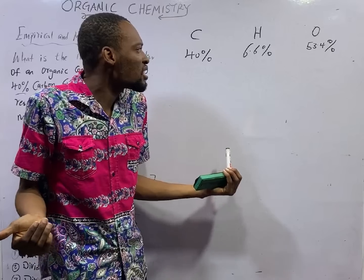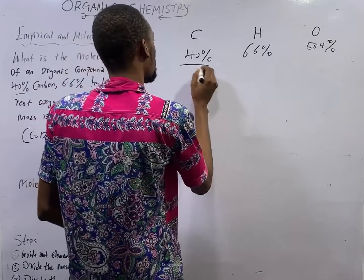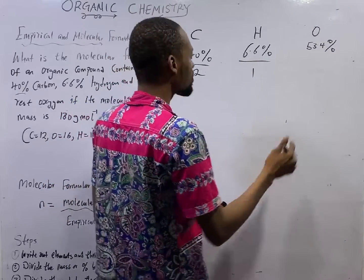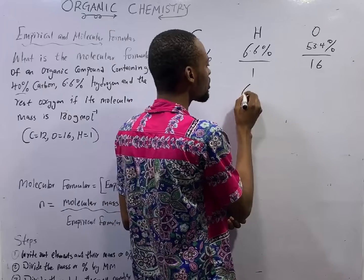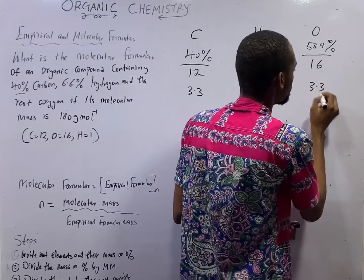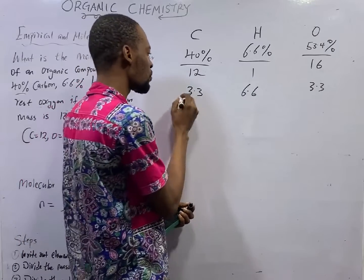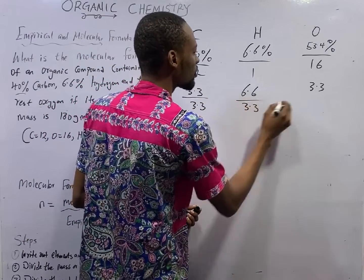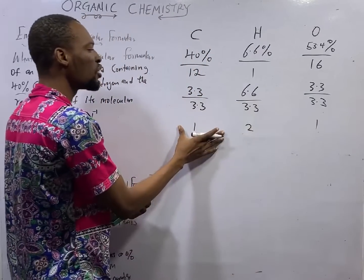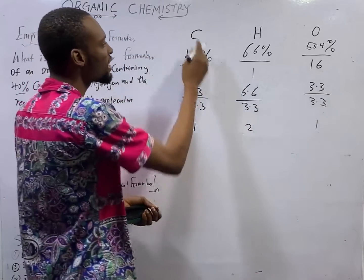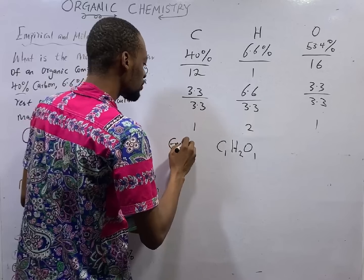The next step is dividing by molar mass to get the number of moles. Divide carbon (40) by 12, hydrogen (6.6) by 1, and oxygen (53.4) by 16. You get 3.3 for carbon, 6.6 for hydrogen, and 3.3 for oxygen. Then divide by the smallest number, which is 3.3. This gives 1 for carbon, 2 for hydrogen, and 1 for oxygen — all whole numbers. So the empirical formula is CH2O.